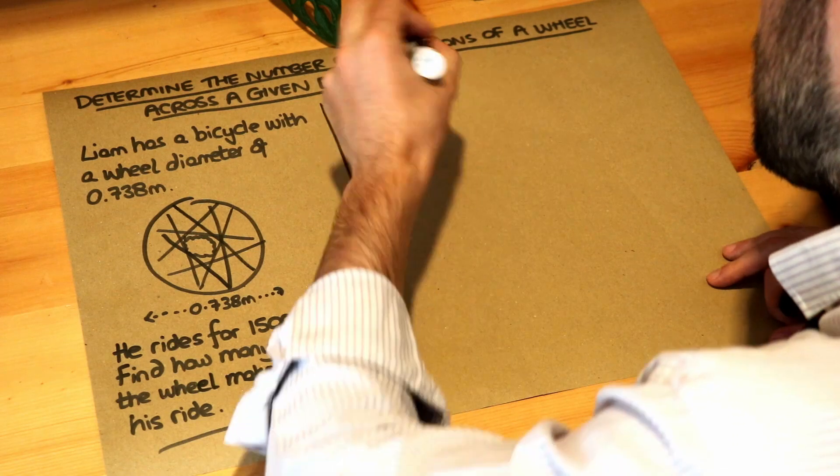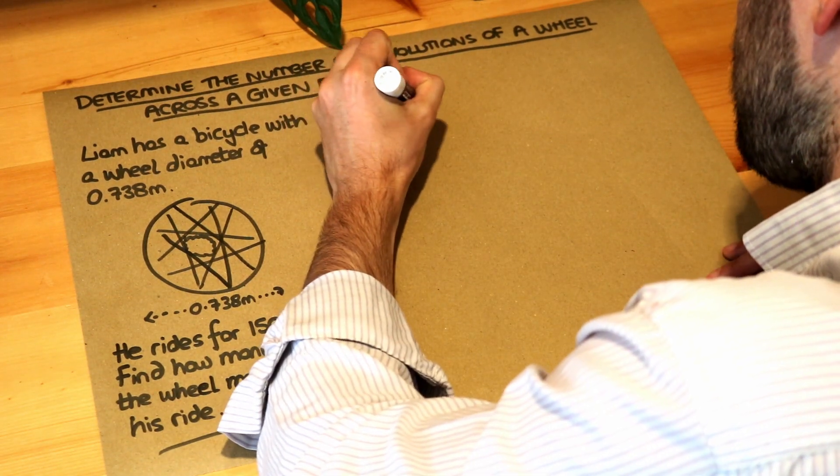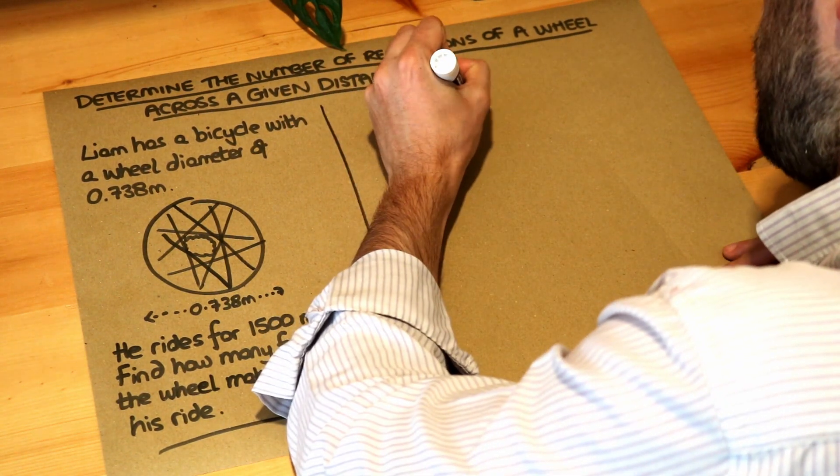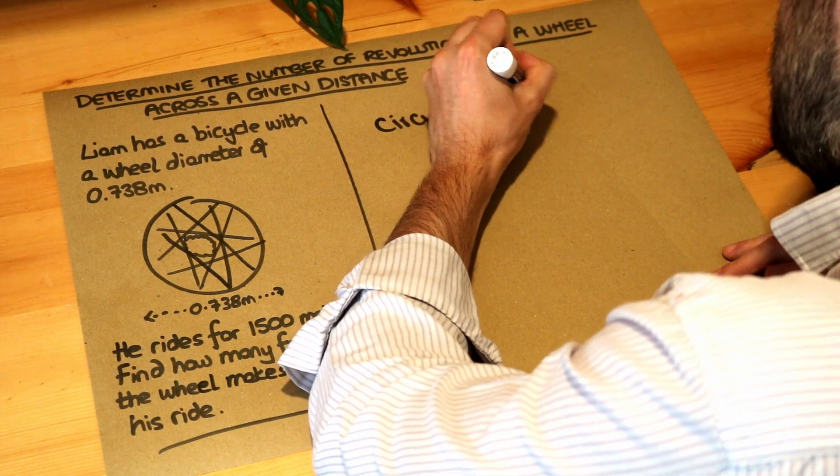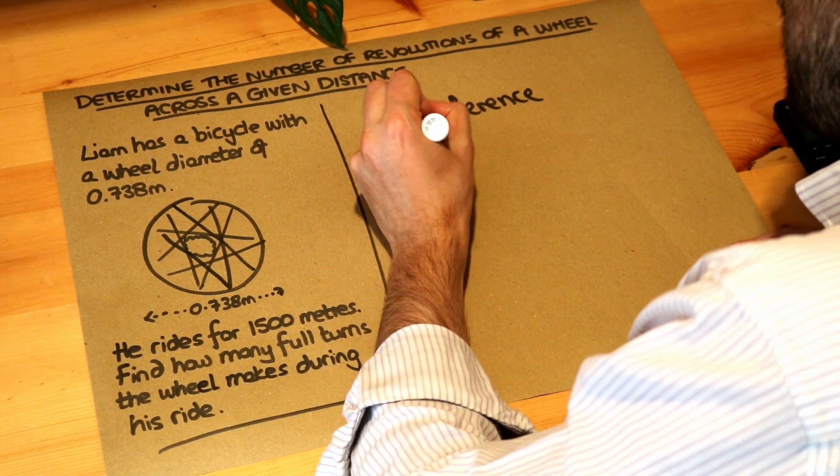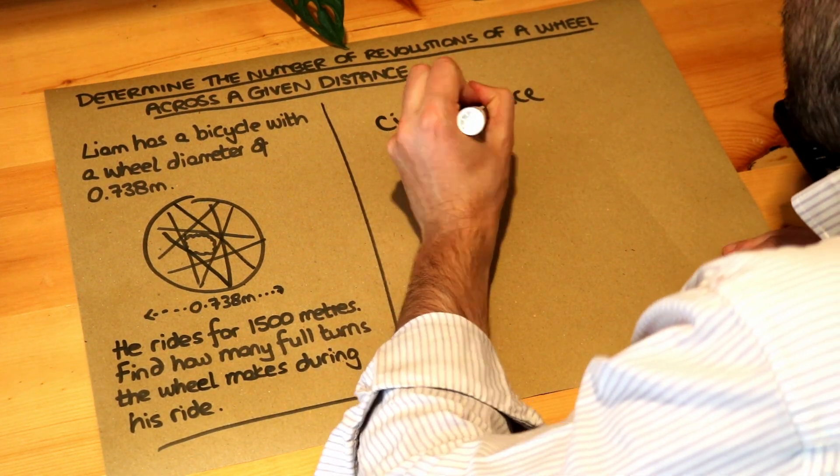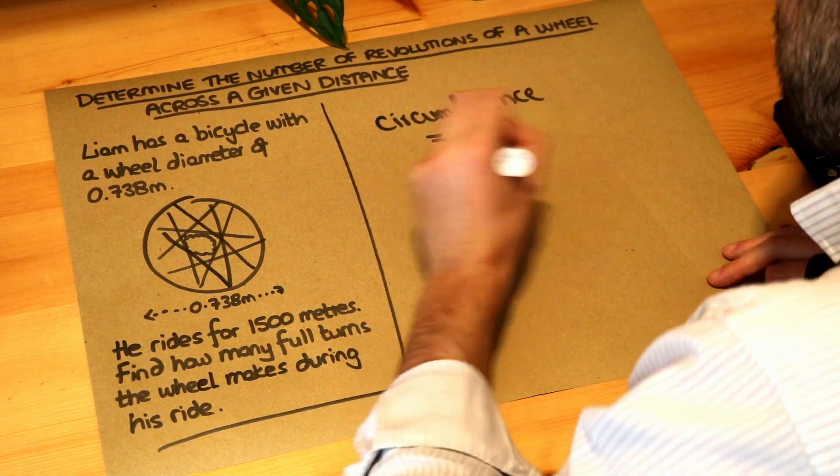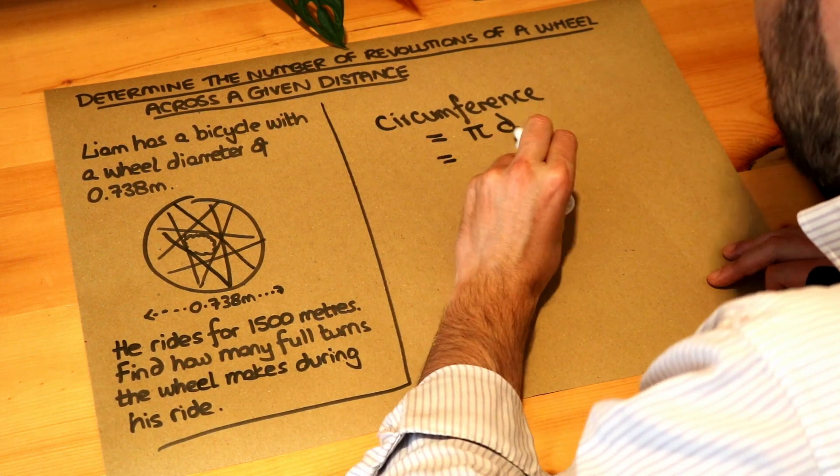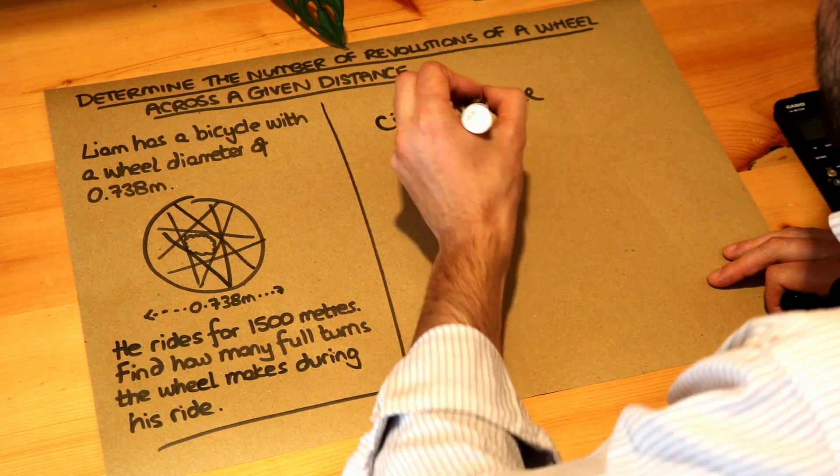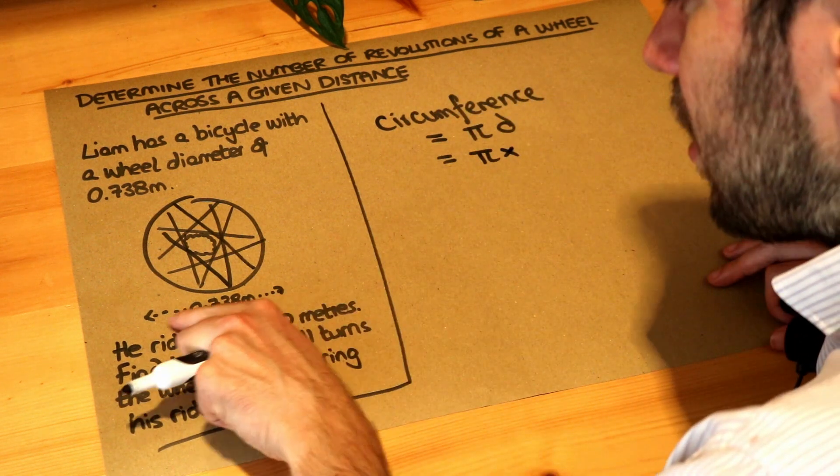Now we should first find the circumference of the wheel and I'll explain why in a second. Remember the circumference of a circle is pi multiplied by the diameter of the circle. When we put things next to each other, you times them.